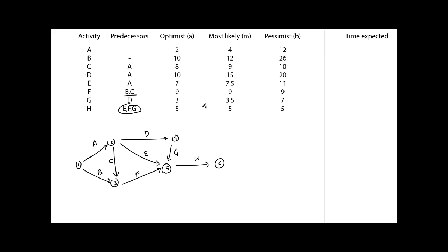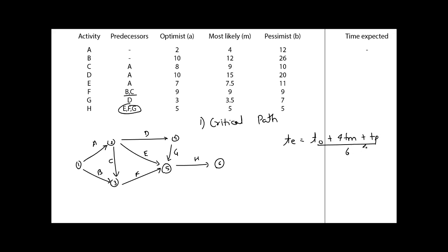The first step is to find the critical path, for which we calculate the expected time TE = (optimistic + 4 × most likely + pessimistic) / 6 for each activity. For activity A: 2 + 4(4) + 12 = 2 + 16 + 12 = 30, divided by 6 gives TE = 5. I'll fill in the remaining values — pause and try them yourself.